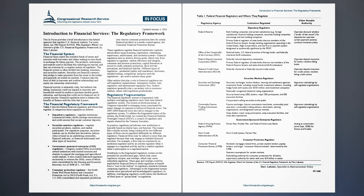Securities markets regulators regulate securities products, markets, and market participants. For regulatory purposes, securities markets can be divided into derivatives — whose value is based on an underlying commodity, financial indicator, or financial instrument — and other types of securities. Government-sponsored enterprise (GSE) regulators: Congress created GSEs as privately owned institutions with limited missions and charters to support the mortgage and agricultural credit markets. It also created dedicated regulators exclusively to oversee the GSEs, some of which were consolidated by the Housing and Economic Recovery Act of 2008, P.L. 110-289.